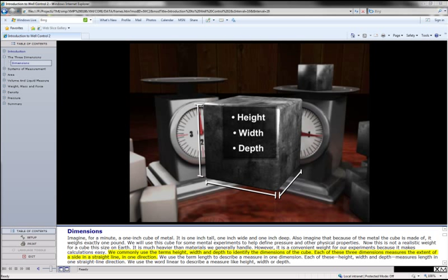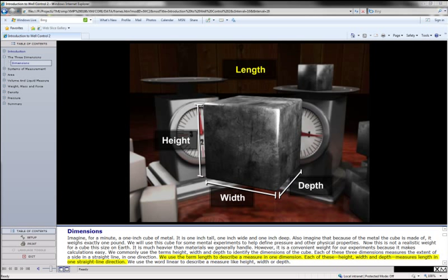We commonly use the terms height, width, and depth to identify the dimensions of the cube. Each of these three dimensions measures the extent of a side in a straight line in one direction. We use the term length to describe a measure in one dimension.